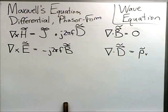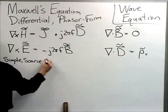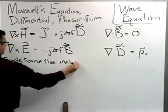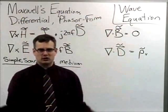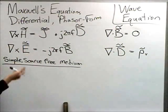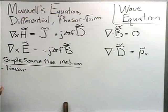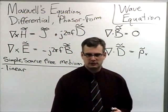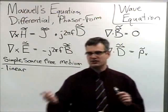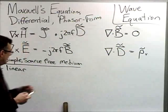Now some more simplifications: we'll operate in a simple, source-free medium. There are four criteria this medium will satisfy. If it is 'simple,' that breaks into three subcategories. First: the medium is linear — if you double the flux density, you double the field. Double H gives double B; double E gives double D. Just about every medium you've dealt with thus far has been linear.